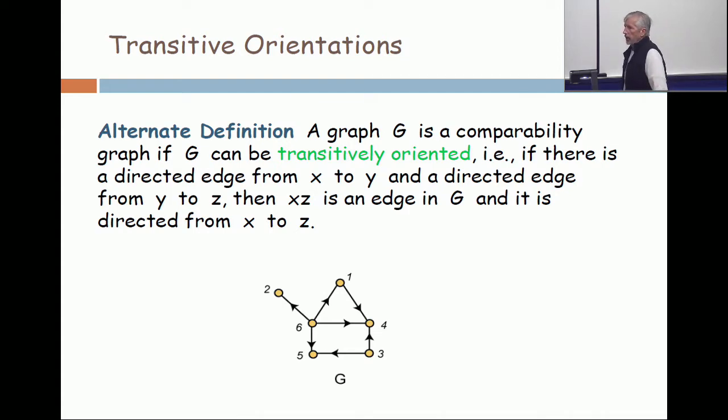This is a subtle definition, so let's study it carefully. A transitive orientation has the property that if you orient an edge from X to Y, and you have another edge from Y to Z, then X and Z are distinct vertices, and you have an edge from X to Z, and it's directed from X to Z.